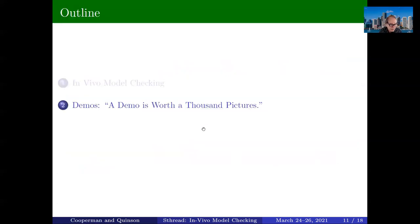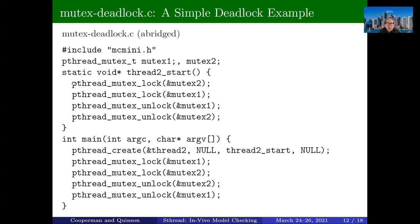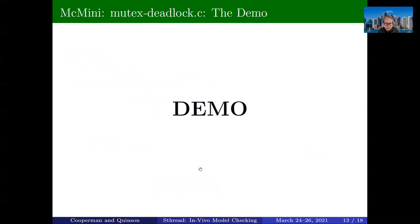That's the first part of the talk. Now let's move on to the demos. The concepts are clear — we're using standard model checking. Because it's McMinni, it cannot cover as many steps before running out of time, but it can execute perhaps about 20 thread primitives. High-powered ones like SimGrid could go further. We'll return to this simple deadlock example: thread2 locks mutex2, thread1 locks mutex1, and we have deadlock because thread2 will be blocked when it tries to lock mutex1 and vice versa.